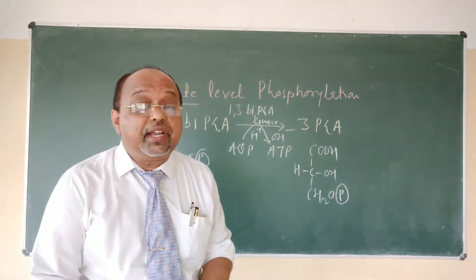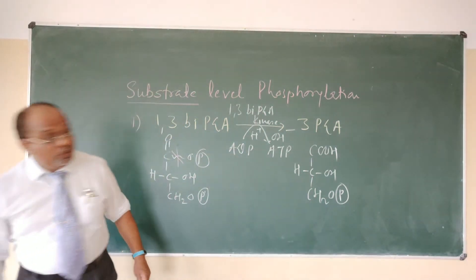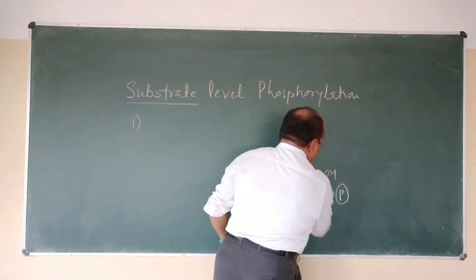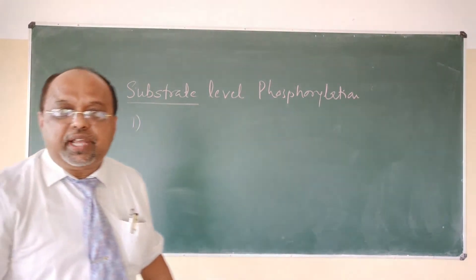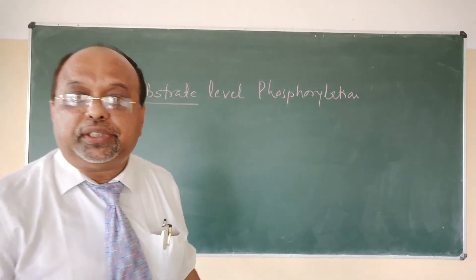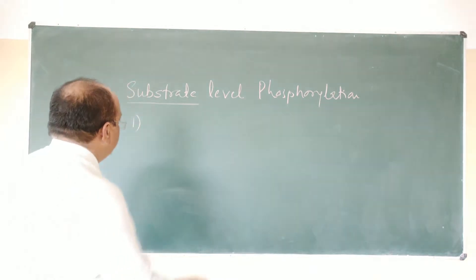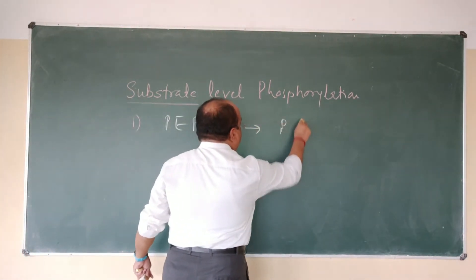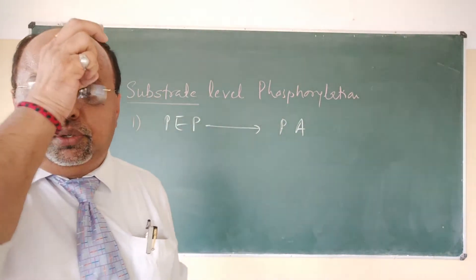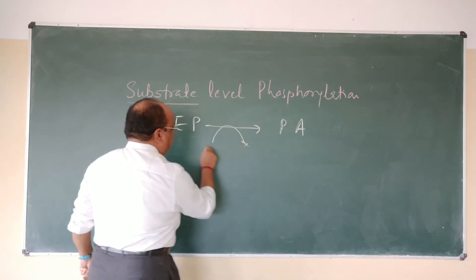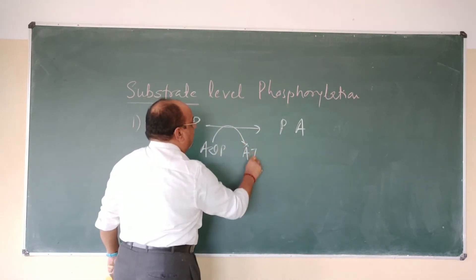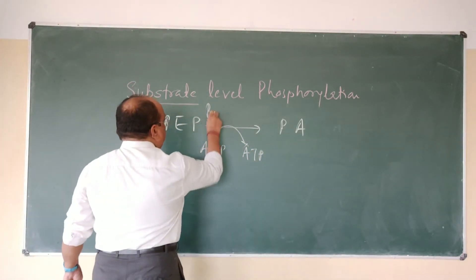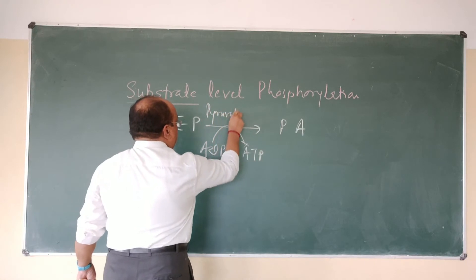The second example is the last reaction of glycolysis — the conversion of phosphoenolpyruvate (PEP) to pyruvate (pyruvic acid). During this reaction, the same thing happens: ADP is converted to ATP, and the reaction enzyme is pyruvate kinase.